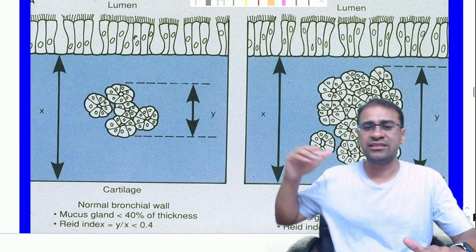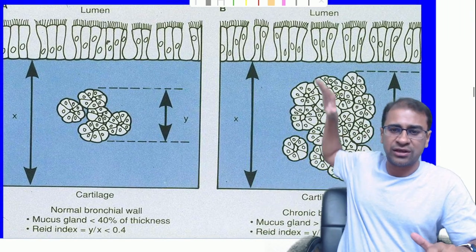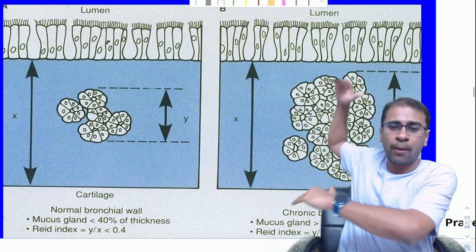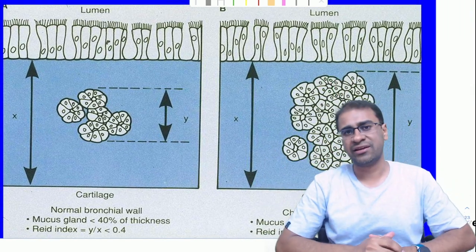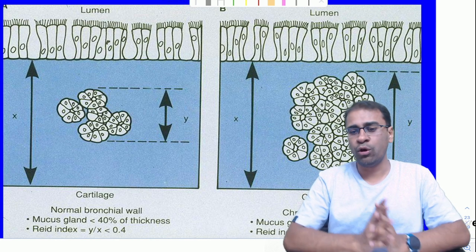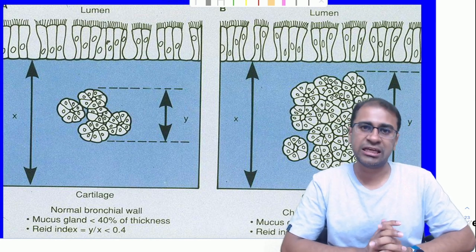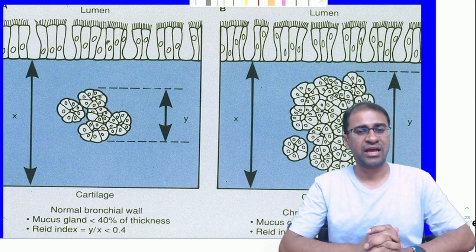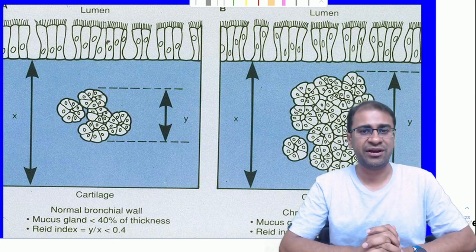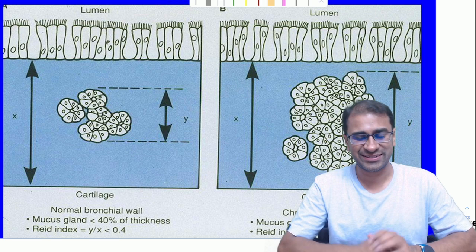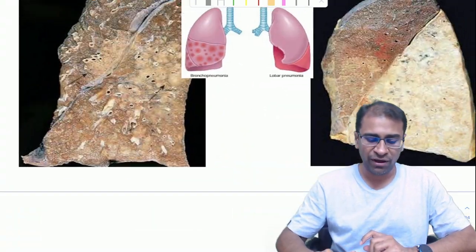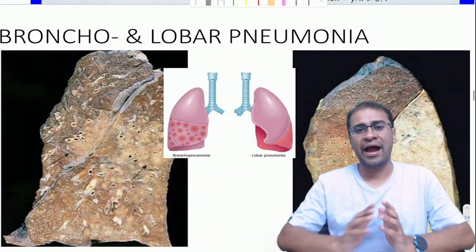The Reid Index, as already mentioned, is seen in chronic bronchitis: it is an increase in the mucous gland layer thickness compared with complete respiratory epithelial layer thickness. A ratio of more than 0.4 points towards an increased Reid Index, indicating chronic bronchitis.